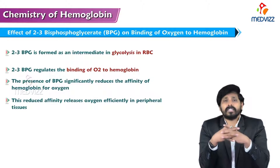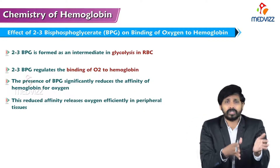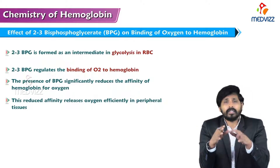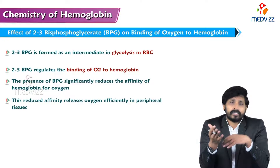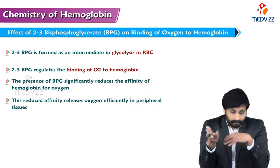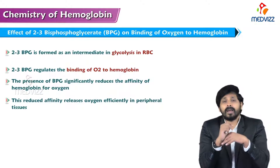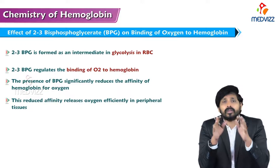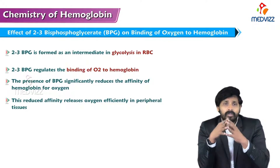But for cells like RBCs, the sole function of the RBC is gaseous exchange — transport of oxygen from lungs to tissues and transport of carbon dioxide from tissues to lungs. For that, the amount of ATP generated by glycolysis is excess, meaning there is wastage of energy. To avoid that, there is a specific mechanism.